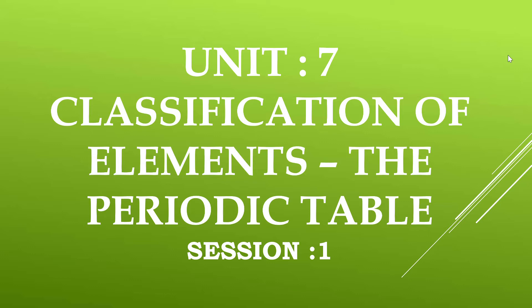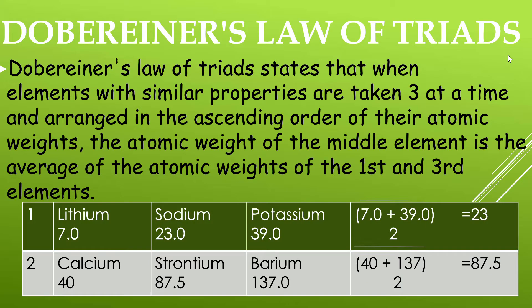As the number of elements increased, it became difficult to keep in memory the chemistries of individual elements and their compounds. A German chemist, John Dobereiner, in 1829 noted that there were groups of elements with three elements, known as triads, in each group with similar chemical properties. Dobereiner's law of triads states that when elements with similar properties are taken three at a time and arranged in ascending order of their atomic weights, the atomic weight of the middle element is the average of the atomic weights of the first and third elements.